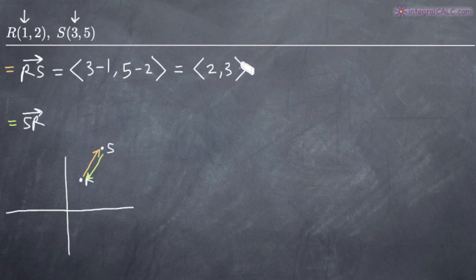That's it. We can call that vector <2,3> the vector RS, moving in that direction.